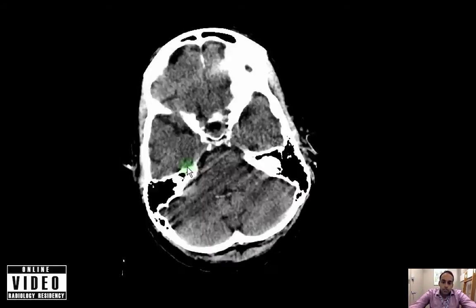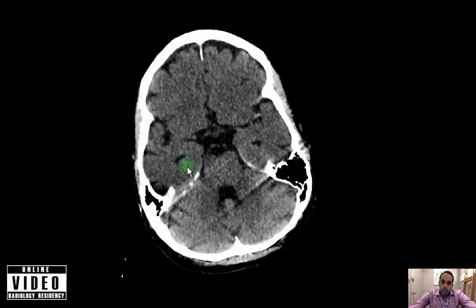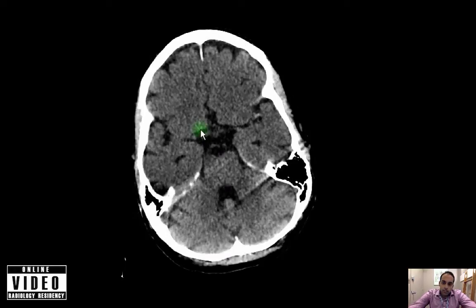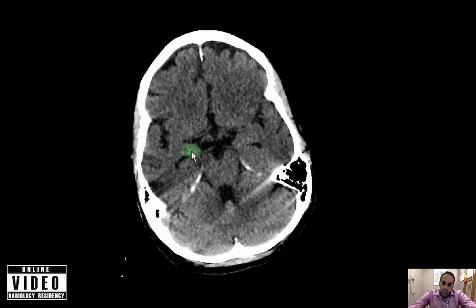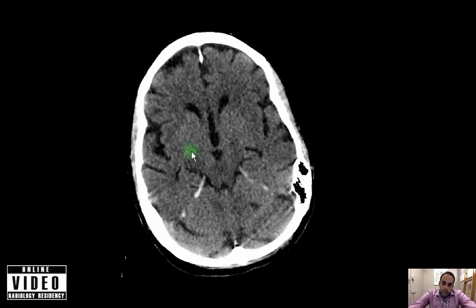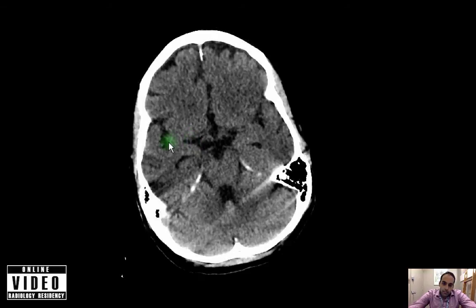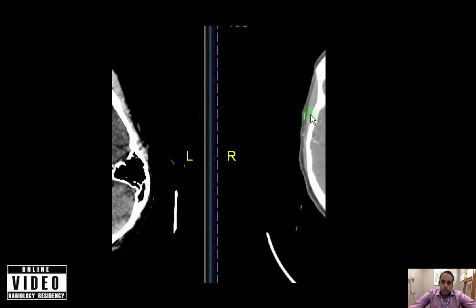Here's another patient with acute onset of right-sided weakness. Again looking all over but focusing on the left, I came down to the supracellar cistern to look at her vessels. Following out the MCAs, I noticed on the left that right at the bifurcation it gets a little dense, while the rest of the vessel doesn't look as dense. Comparing to the right MCA, I'm not seeing as much density. This looked suspicious, so we called it and proceeded to a follow-up CT angiogram.